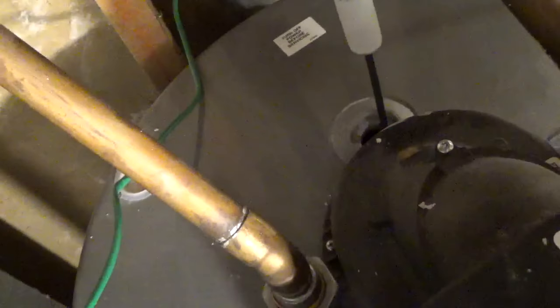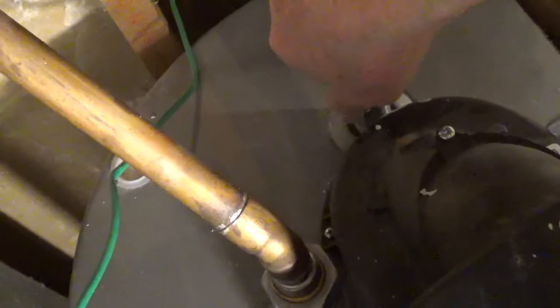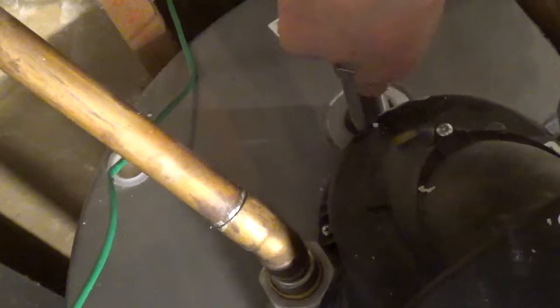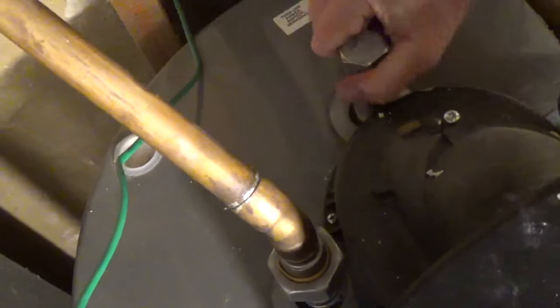Insert the powered anode rod into the opening and turn clockwise until snug, then use a 31mm or a 1 and 3/16 inch socket to tighten it down. The top will be higher than the old anode rod.